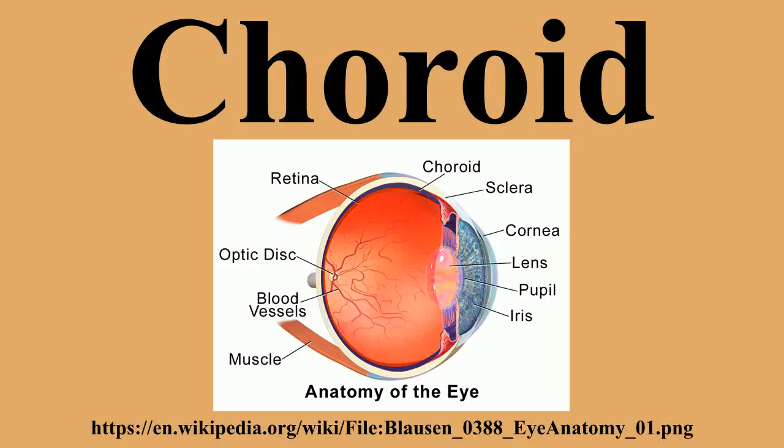The structure of the choroid is generally divided into four layers: Haller's layer, the outermost layer of the choroid consisting of larger diameter blood vessels; Sattler's layer, a layer of medium diameter blood vessels; the choriocapillaris, a layer of capillaries; and Bruch's membrane, the innermost layer of the choroid.